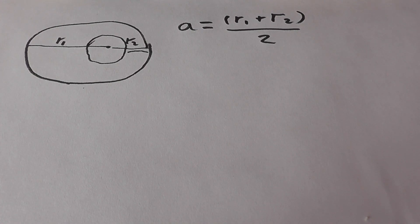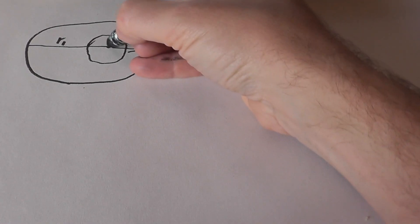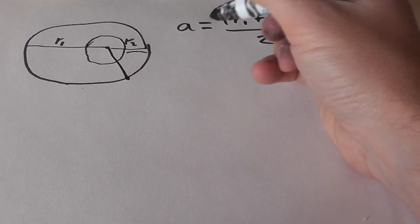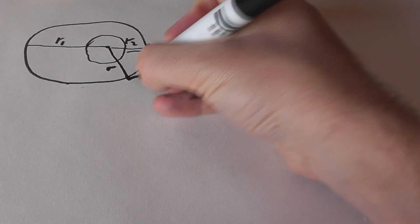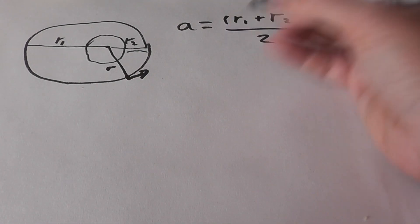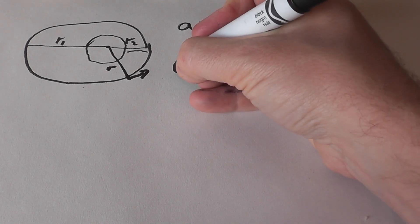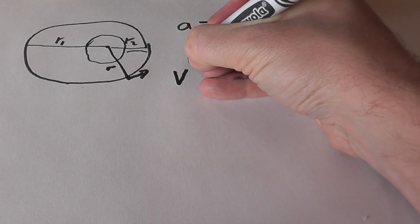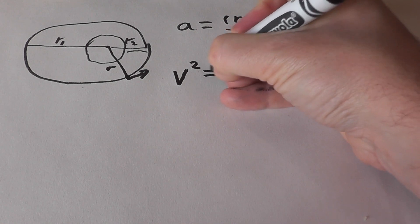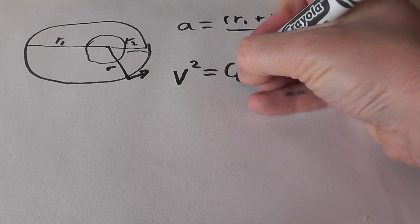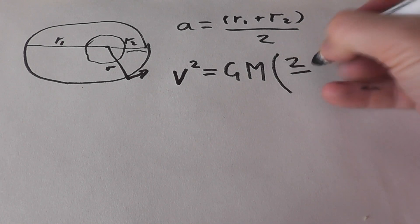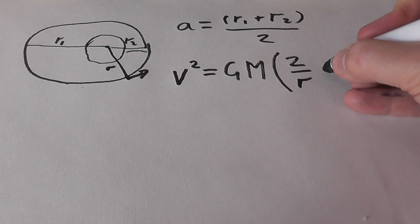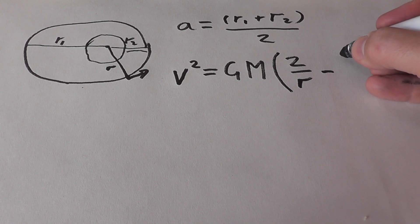So the question we want to ask is, given that we're here in an orbit at a distance R, what is the velocity that we have around the center? And there's actually an equation for that. A very simple equation that you're going to need everywhere. It says that V squared is equal to GM times 2 over R, which is the distance you're currently at, minus 1 over A, the semi-major axis.